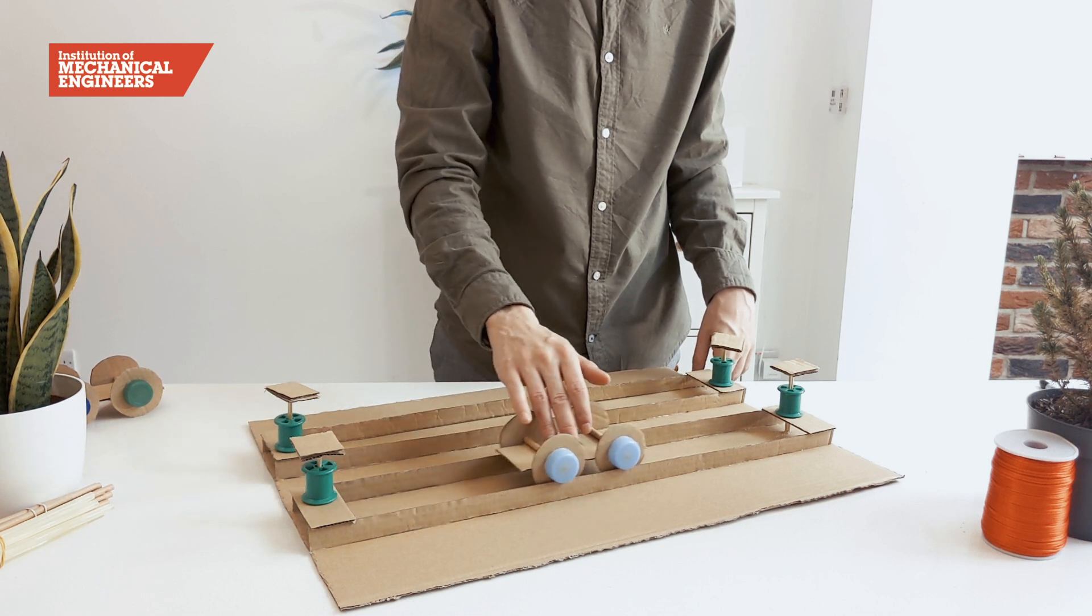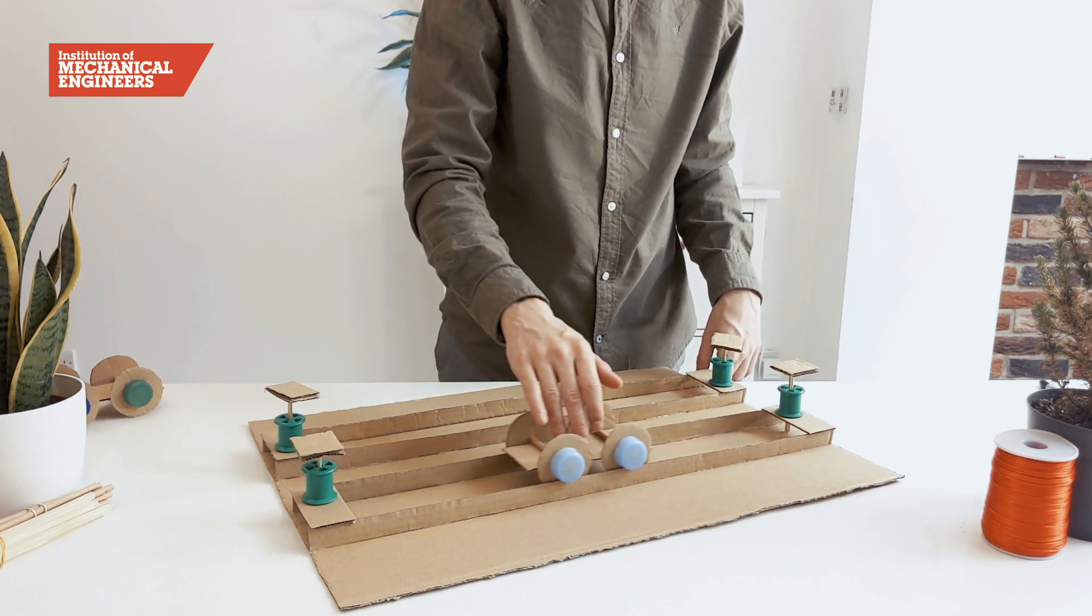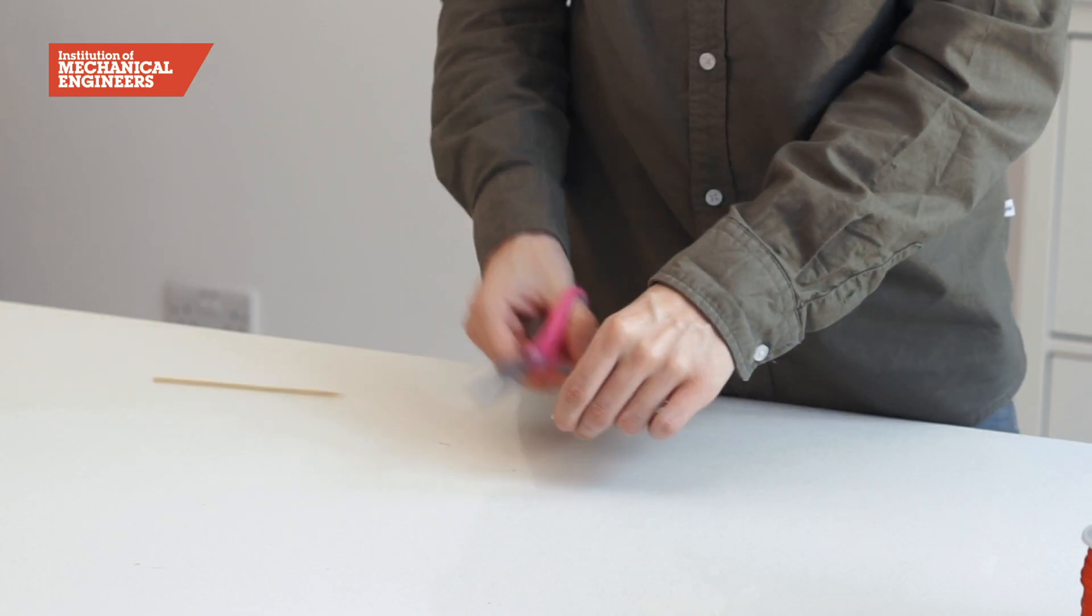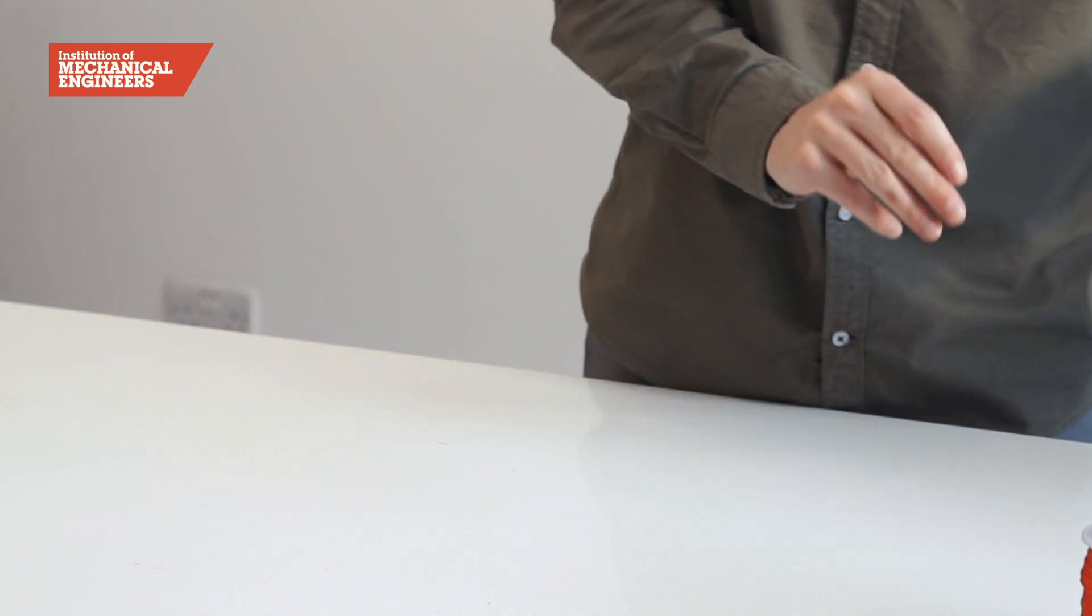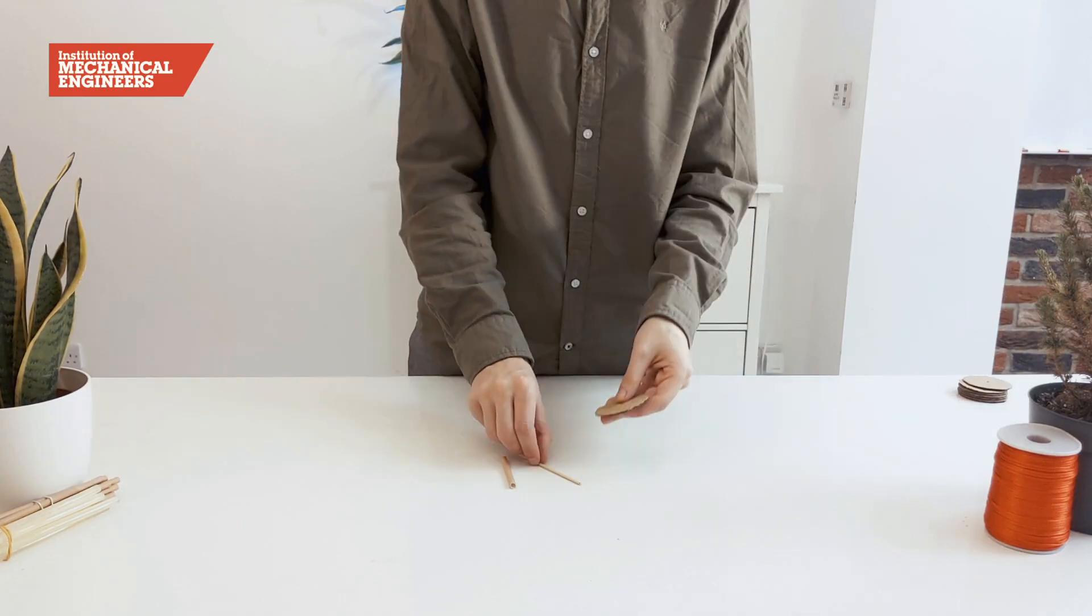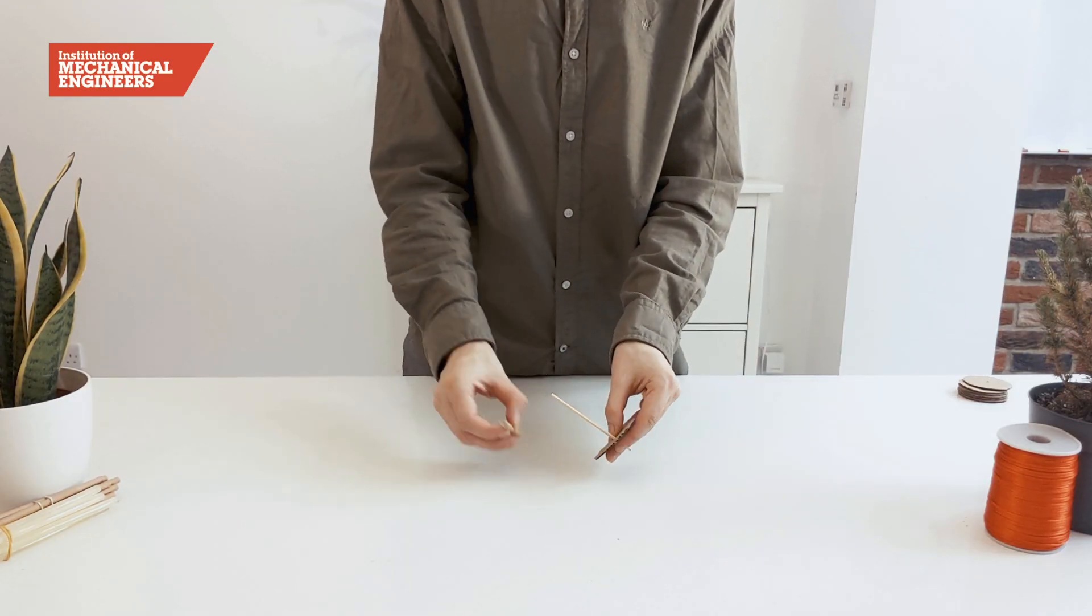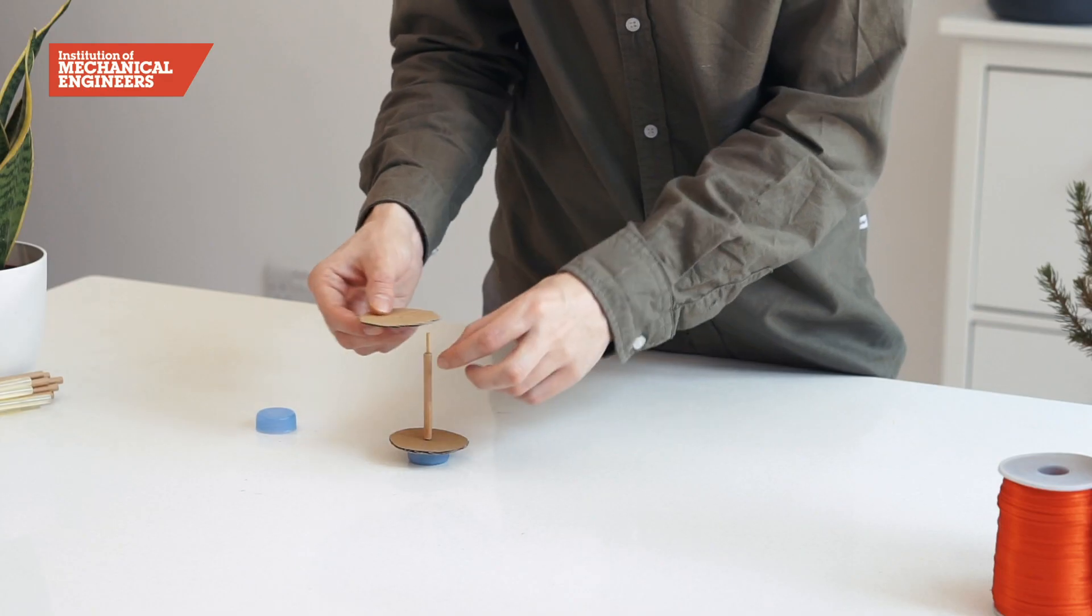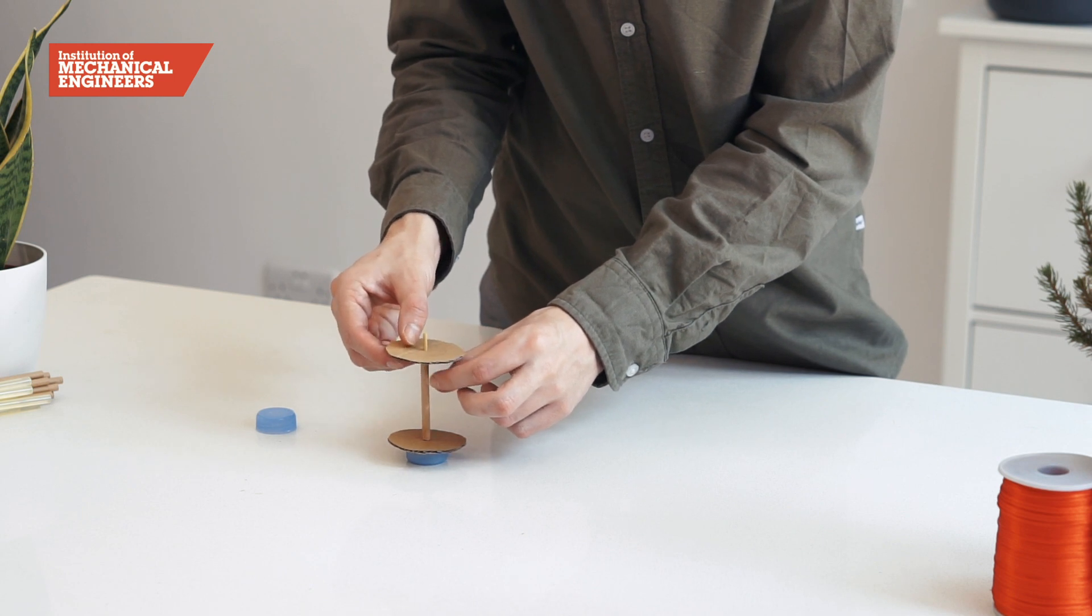Axles will allow the train wheels to rotate freely. To construct an axle we will first trim a piece of kebab stick to the width of the track plus the depth of two plastic bottle tops. Then thread a piece of straw onto the stick and push a card disc and a plastic bottle top onto either end.